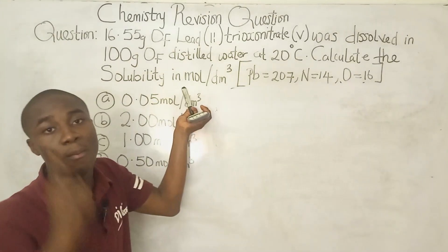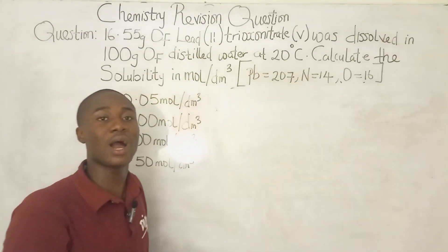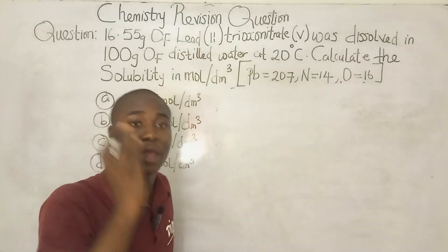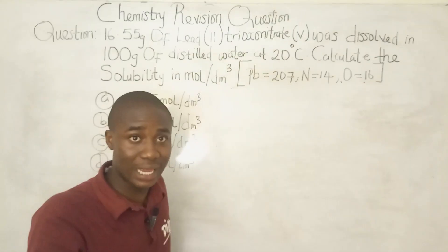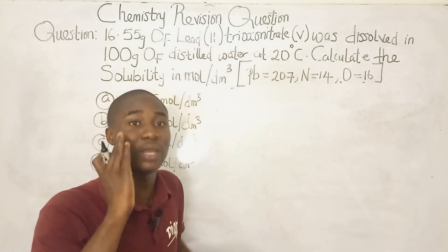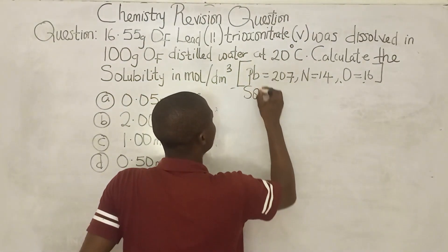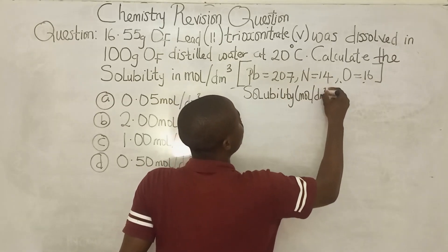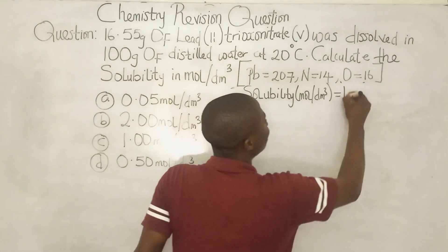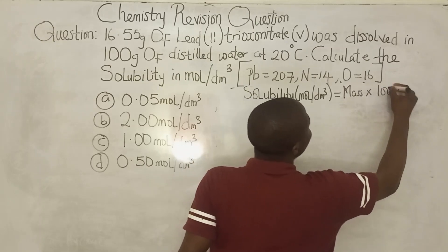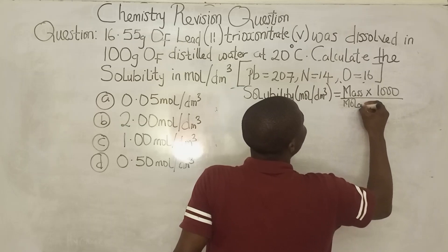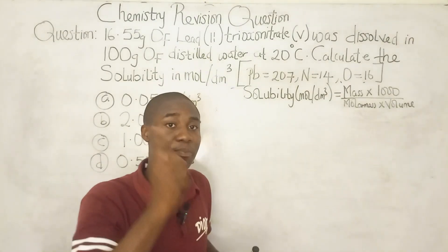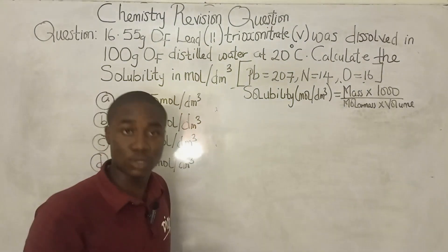This question is on calculating solubility in moles per dm³. The formula you must apply when solving questions of this type is: solubility in moles per dm³ equals mass times 1000, divided by molar mass times volume. This formula is very important.